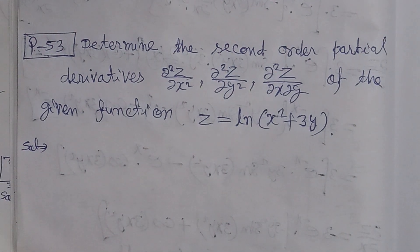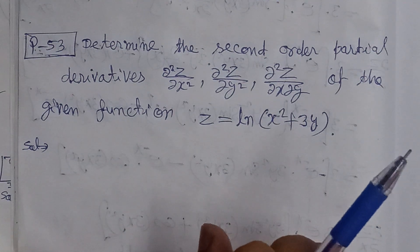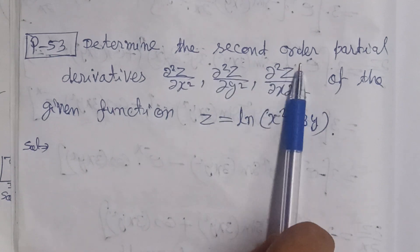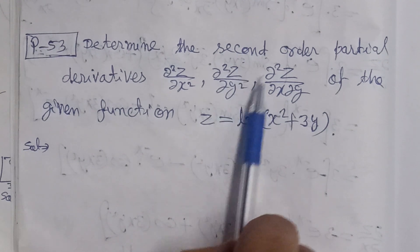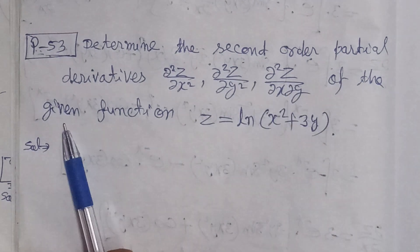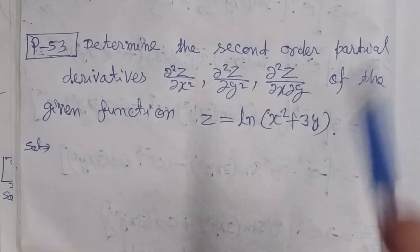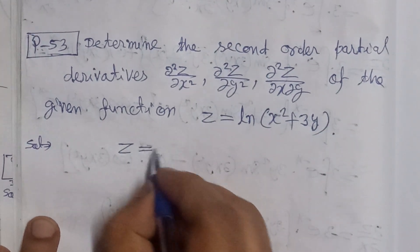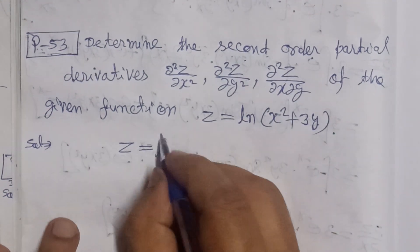Bismillahirrahmanirrahim. This problem is related to partial differentiation of differential calculus. Determine the second order partial derivatives: del²z/del x², del²z/del y², and del²z/del x del y of the given function z = natural logarithm of (x² + 3y). We write the value of z, which is a function of two independent variables x and y. I write this natural logarithm as log base e.